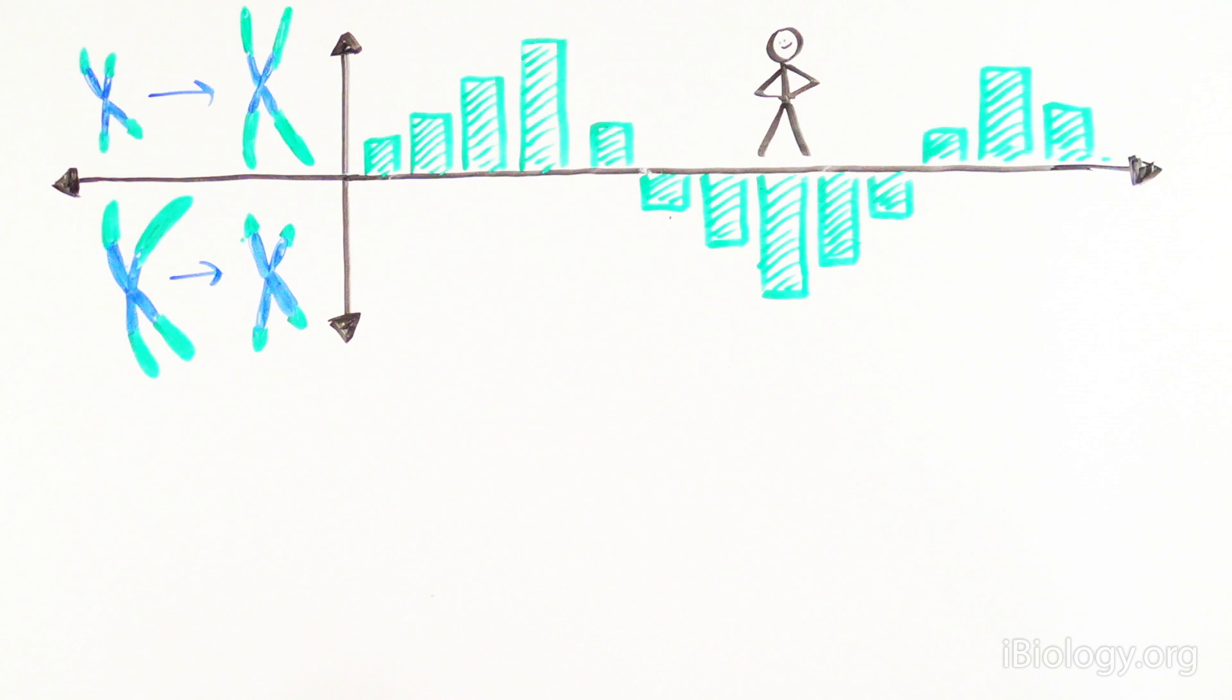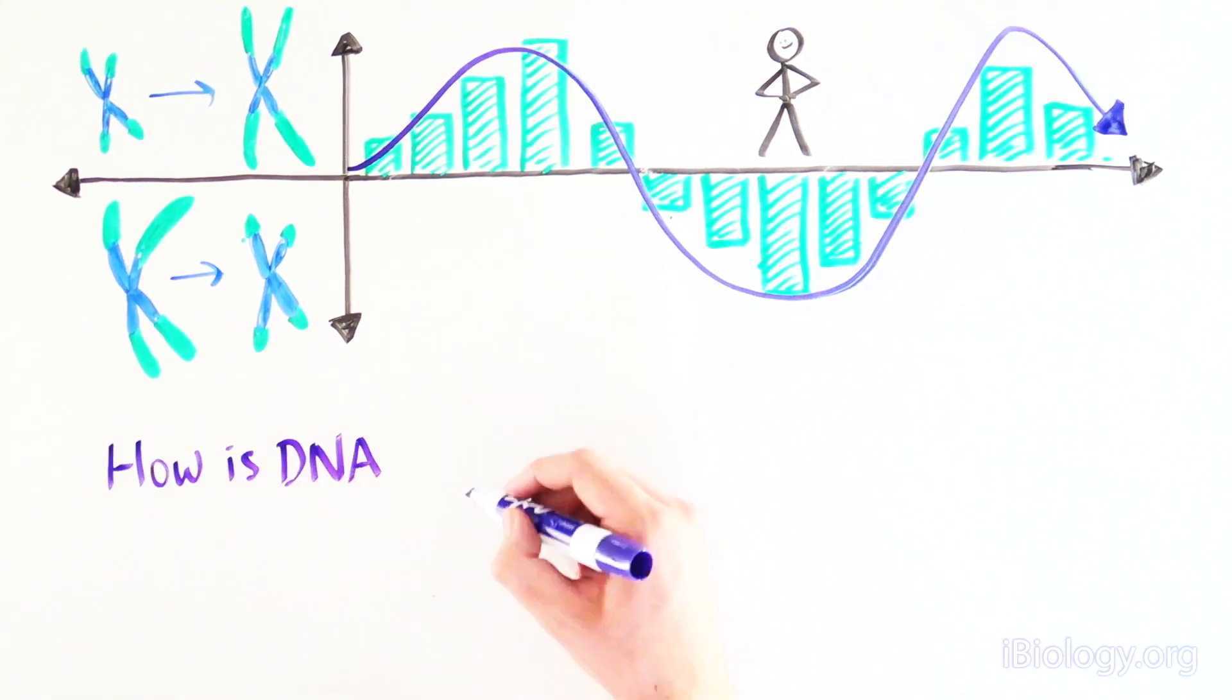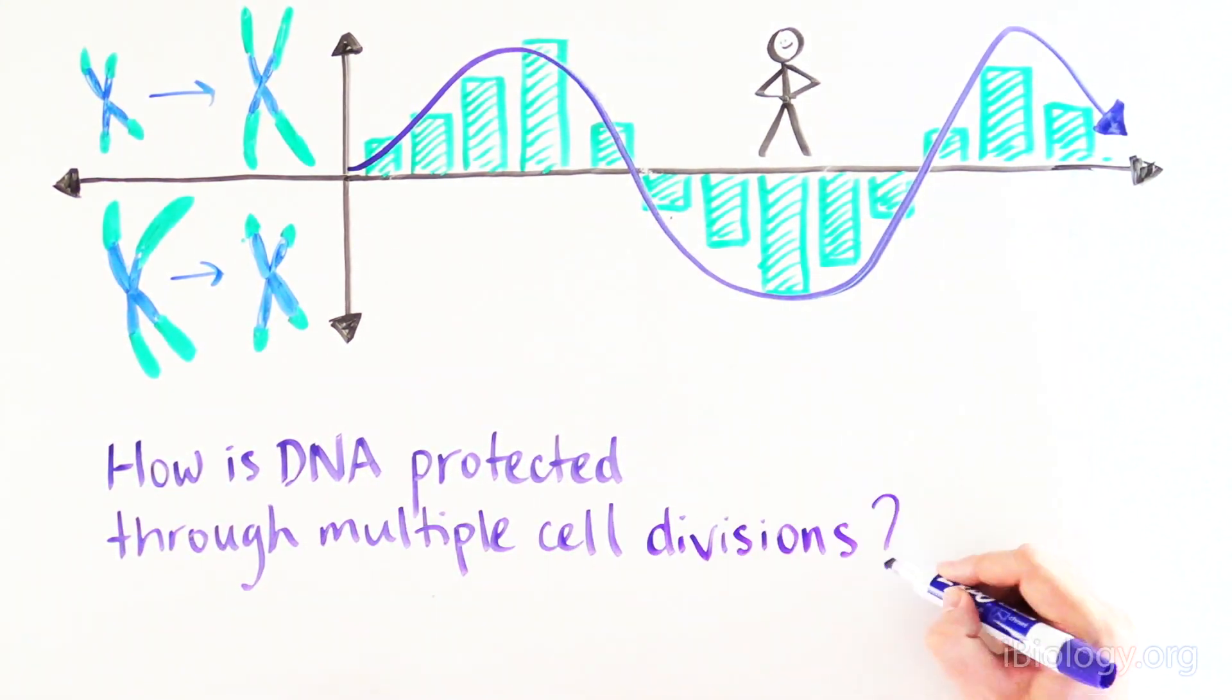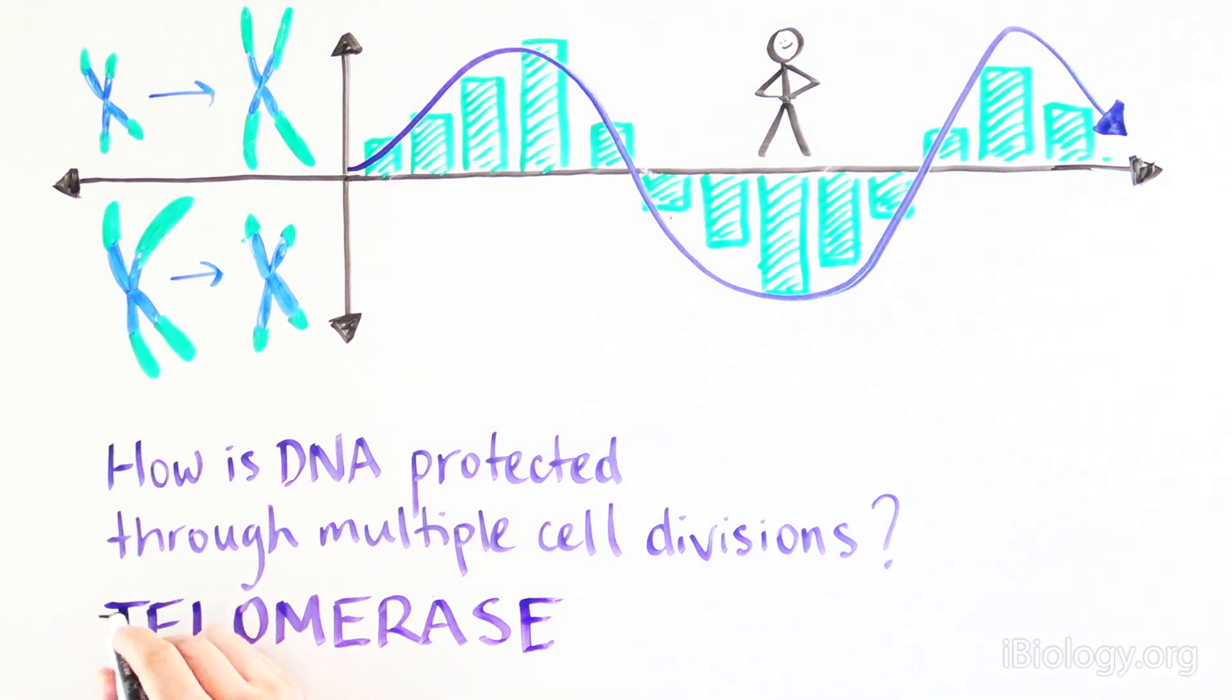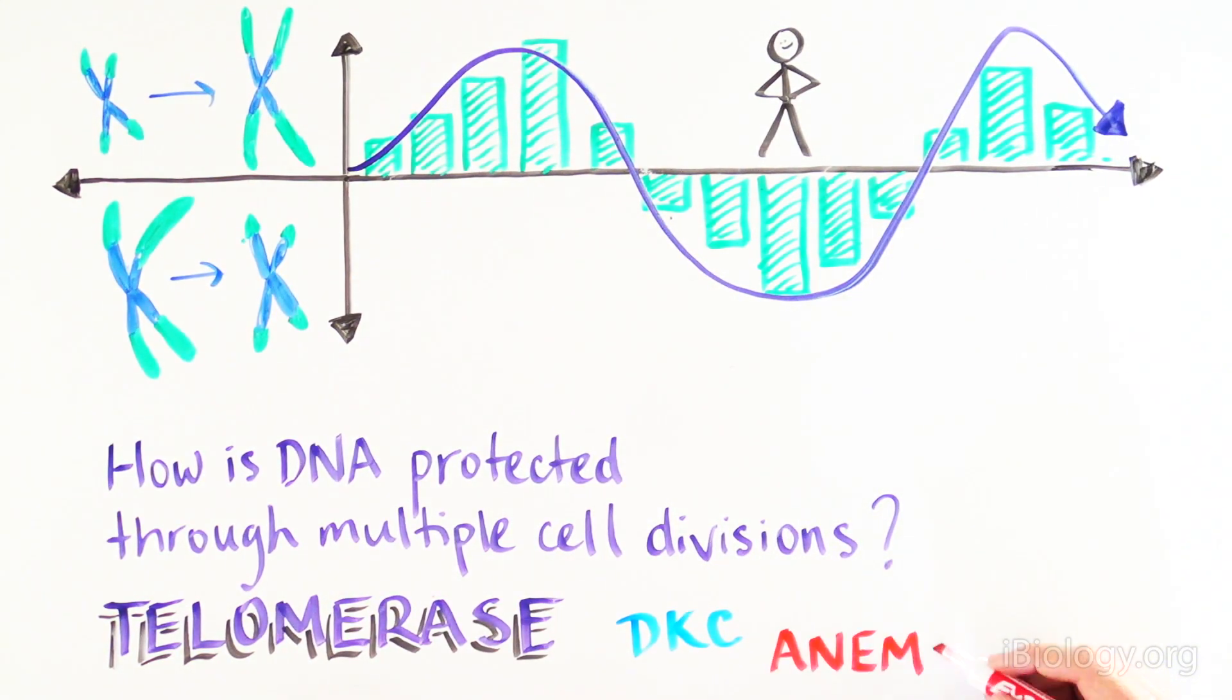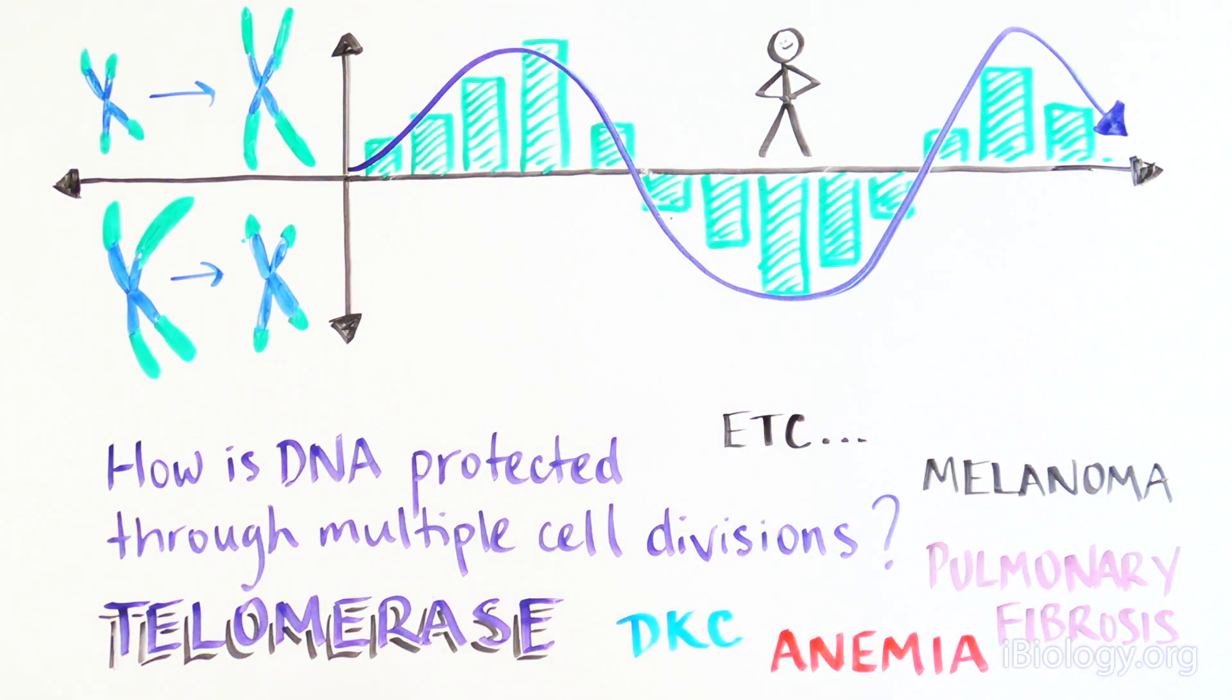It's captivating to learn that we live our lives between states of telomere extension and shortening, and this has important implications for our biology. It's fascinating to see the basic science question of how DNA is protected through multiple cell divisions lead to the discovery of an enzyme that is now implicated in a growing number of diseases and whose extremely complex biology we're still trying to unravel 30 years later.